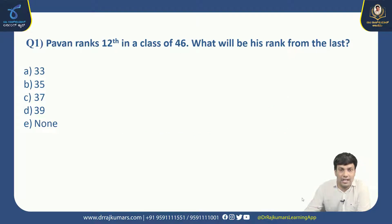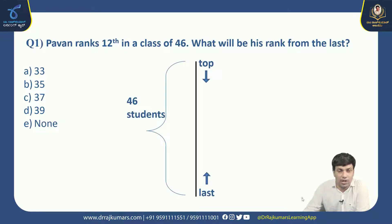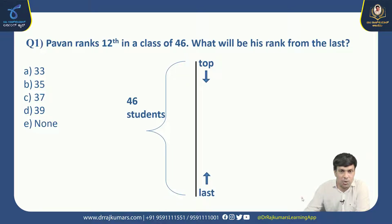Pavan ranks 12th in a class of 46. What will be his rank from the last? Options are 33, 35, 37, 39, and none. Let us crack this problem. There is a class of 46 students. In those 46 students, Pavan is ranking 12th from the top. We are supposed to find the order of Pavan from the bottom or from the last.